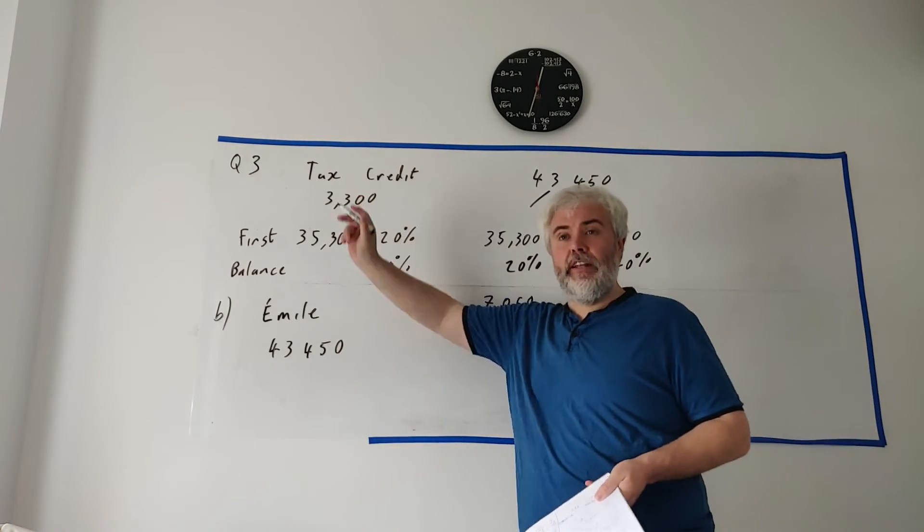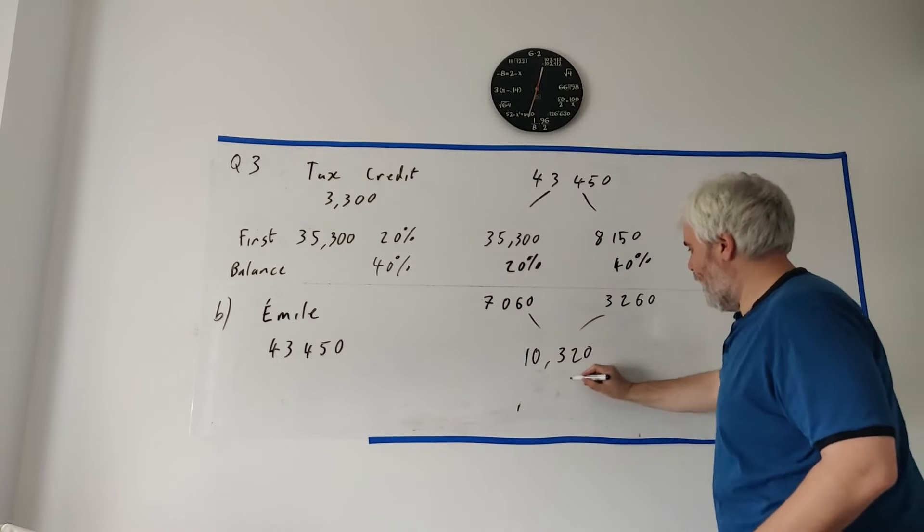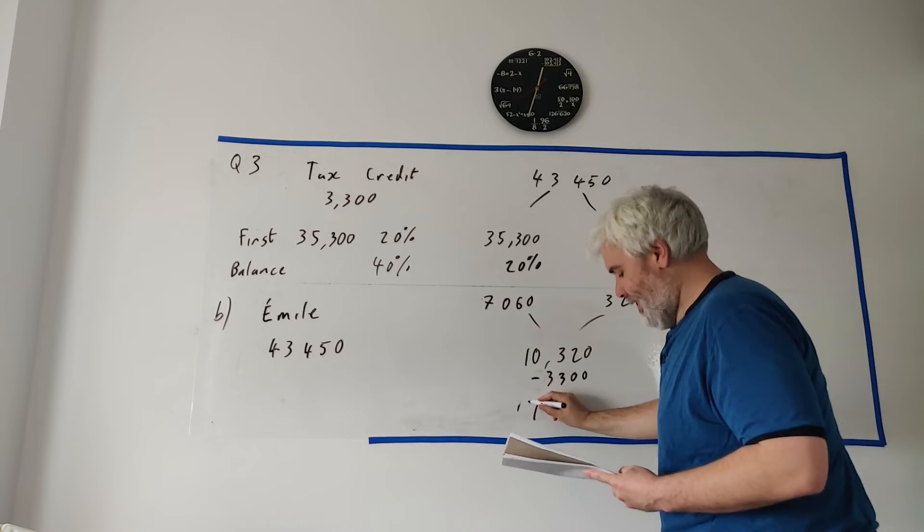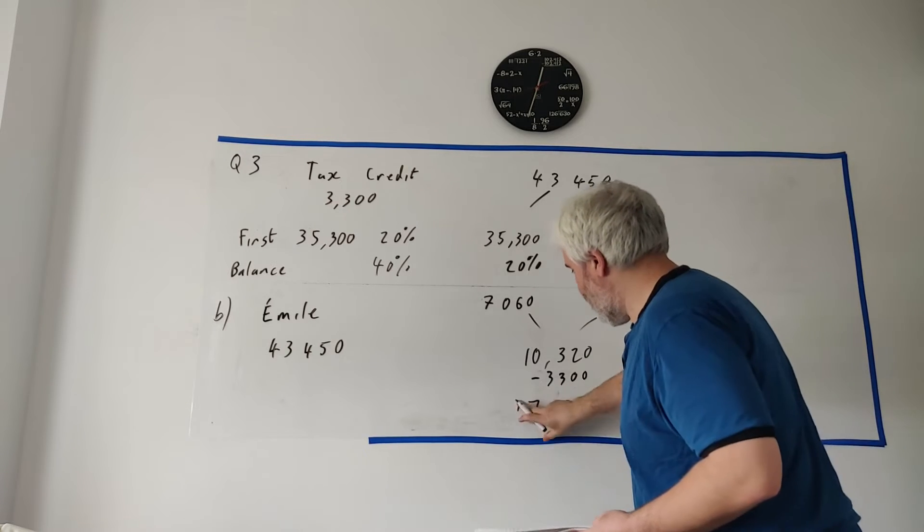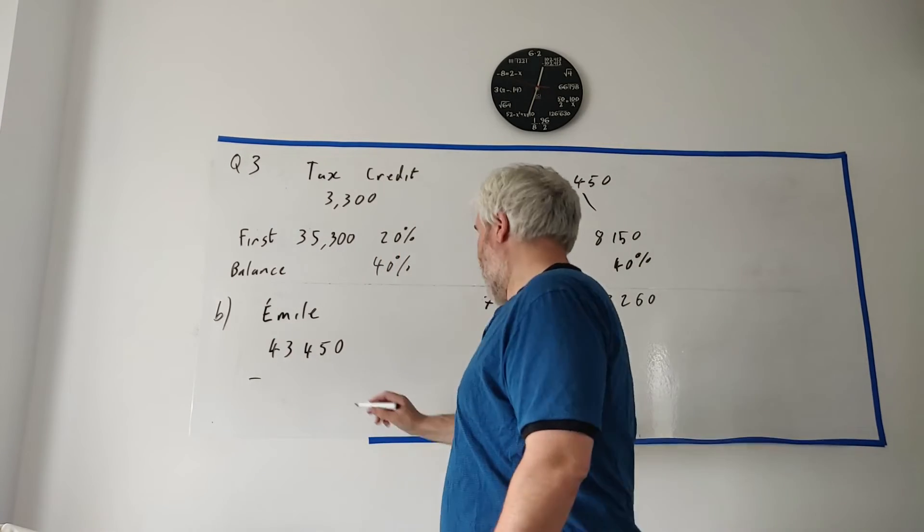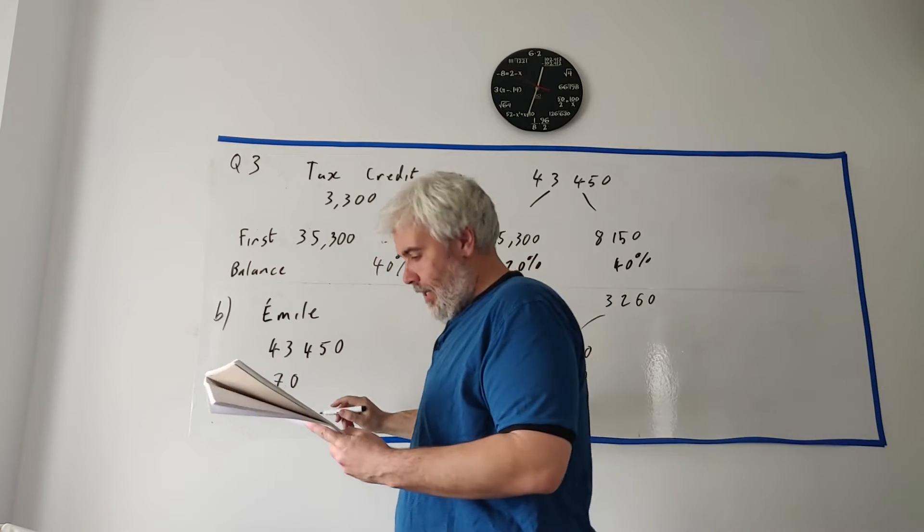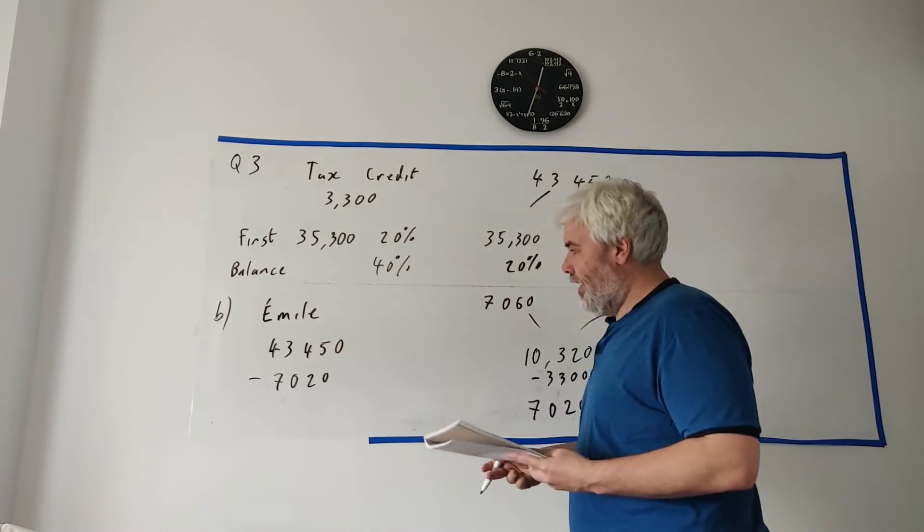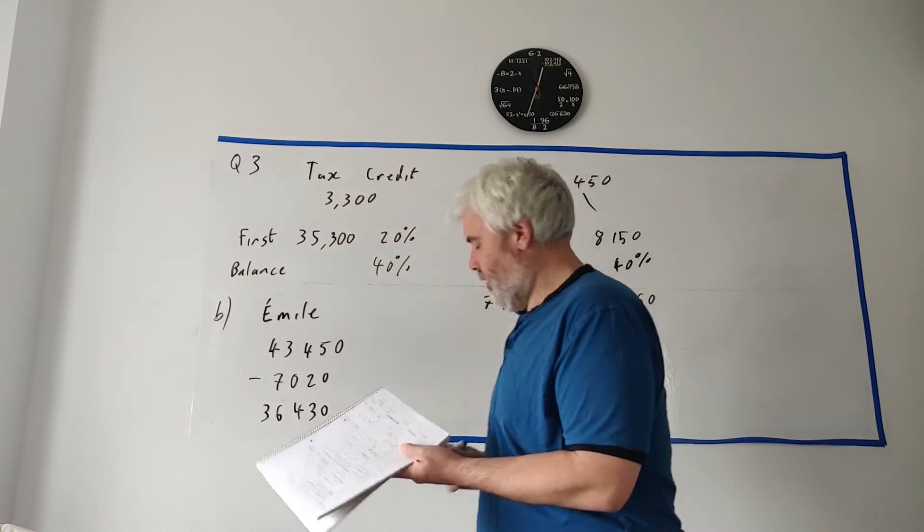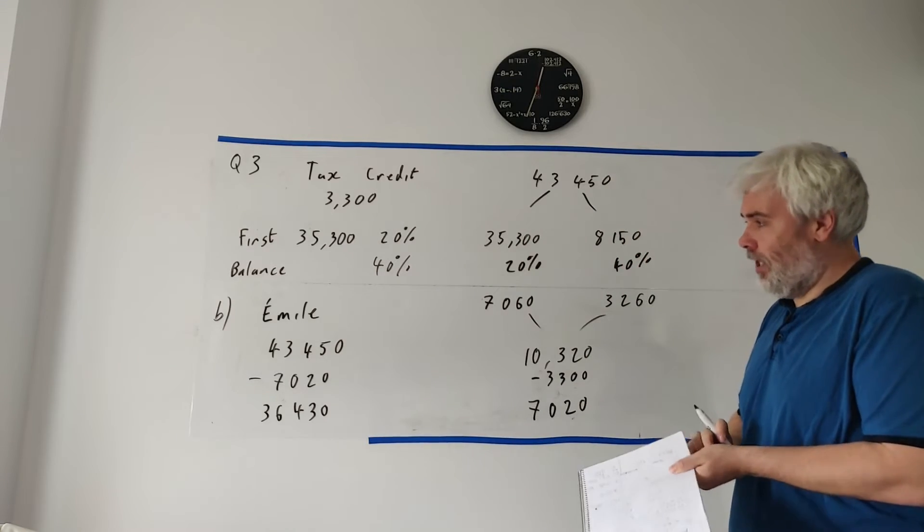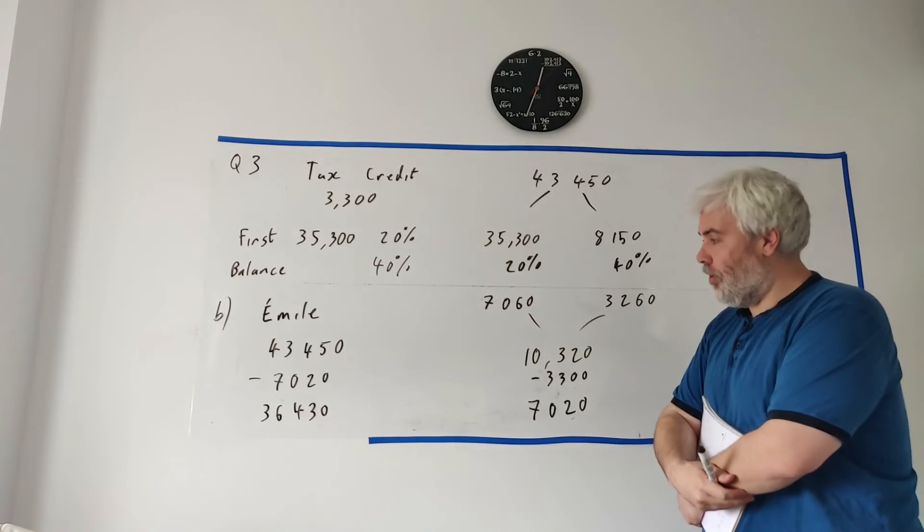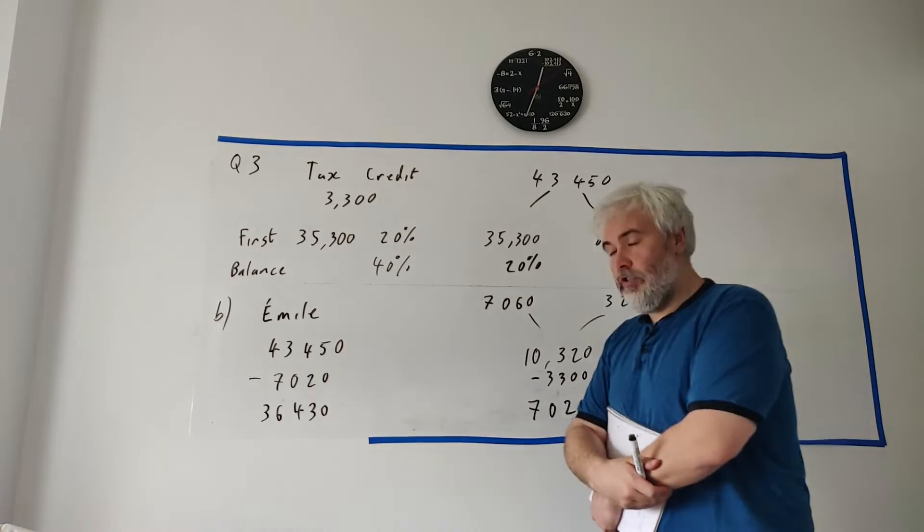But again, wait. Tax credits. She also has them. So we'll take that away: 3,300. Take that away and we're left with 7,020. That's the total tax she has to pay. She got paid this amount and she had to pay 7,020. If we take that away, we get 36,430. That's how much she gets paid. She thought she was getting paid 43,000. She had to pay taxes and she actually only got paid 36,430.